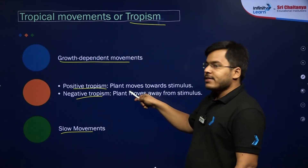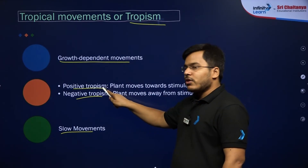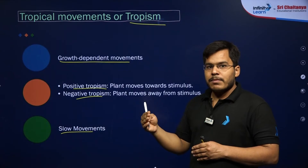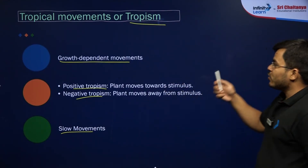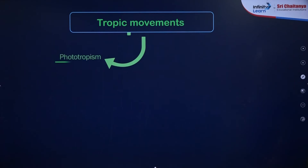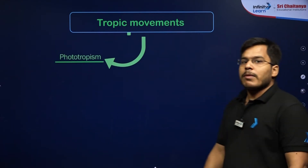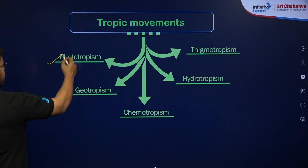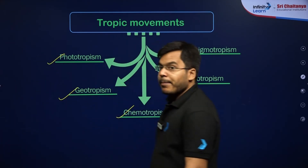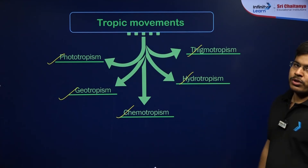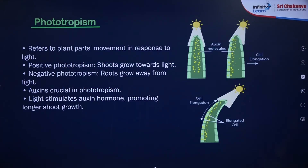Tropism can be positive, meaning the plant part moves towards the stimulus, or negative, meaning the plant part moves away from the stimulus. There are five types of tropic movements: phototropism depending on light, geotropism depending on gravity or earth, chemotropism depending on chemicals, hydrotropism depending on water, and thigmotropism depending on touch.